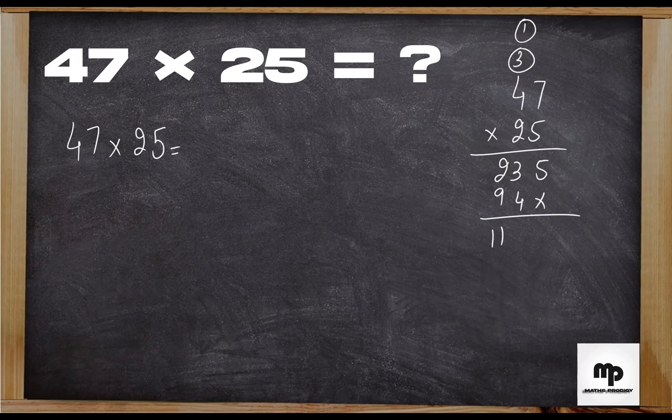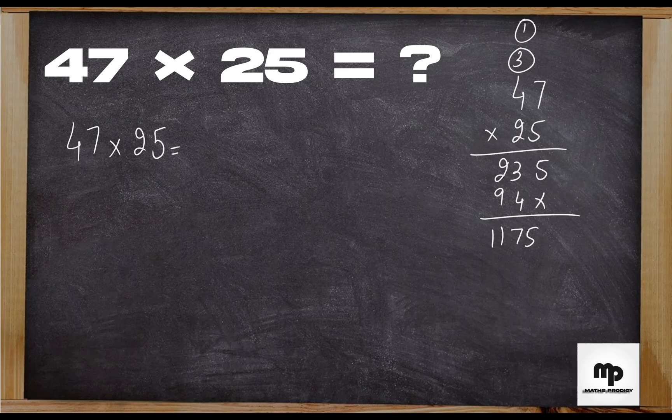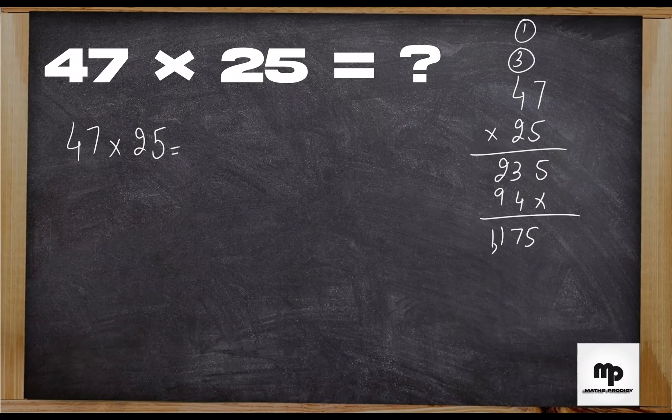If you don't want to use this method and want to try another method, there is one more which you have learned, which is 47 times 20 plus 5.